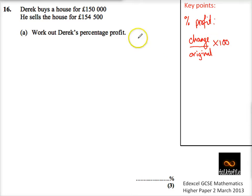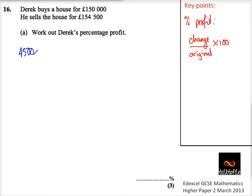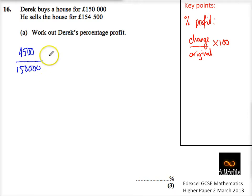So you can see he sells his house for 4,000 more — so it's gone up 4,500. And over the original price, which is 150,000. So if I set up a fraction: 4,500 over 150,000, times that by 100, that's going to help me get my percentage profit.